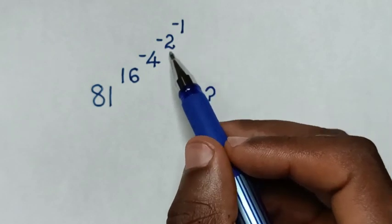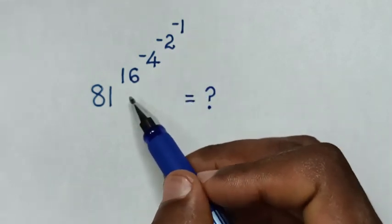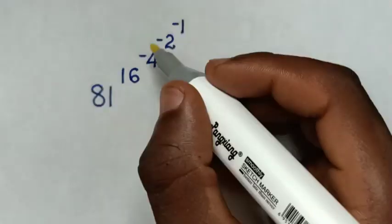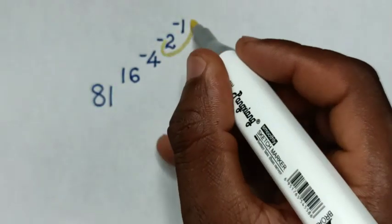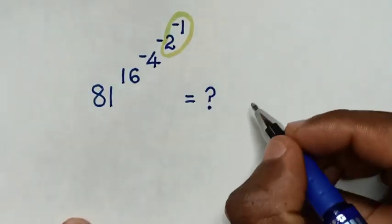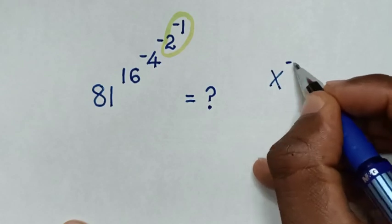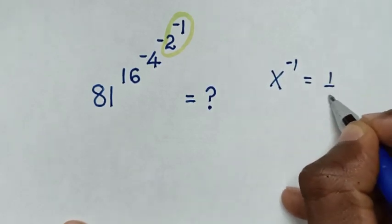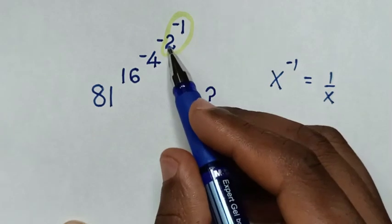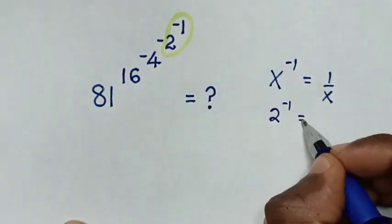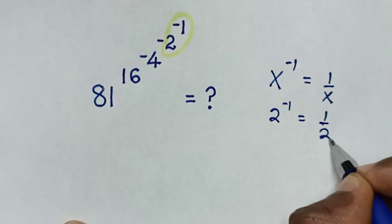We'll start solving from top to down. We'll start solving from 2 power of negative 1, leaving the negative behind. By applying the rule that x power of negative 1 is equal to 1 over x. So from here, 2 power of negative 1 will be equal to 1 over 2.